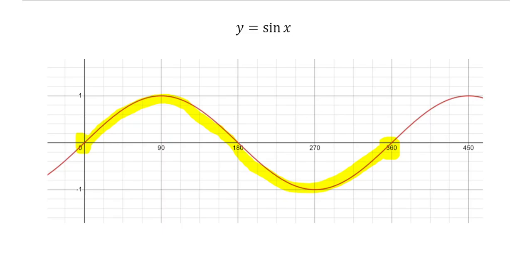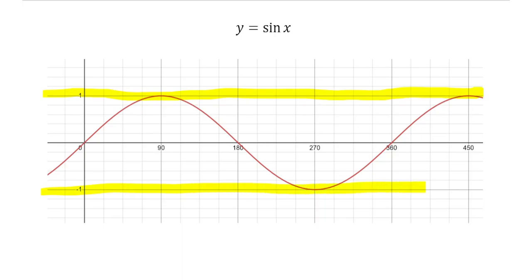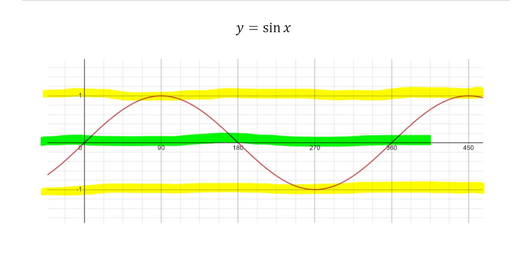The next wave would also take 360 degrees, and the wave after that too. The sine wave also has a maximum y-value of one and a minimum y-value of negative one, so the sine graph goes between plus and minus one on the y-axis. Lastly, the central line for the sine graph is the x-axis — exactly halfway between one and negative one.